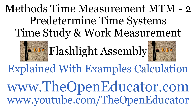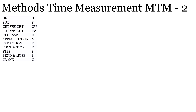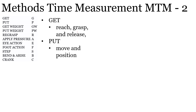This is MTM System 2, a much simpler system than Measurement System 1 seen in the previous video. I'm going to use the same flashlight assembly example. This system divides all kinds of motion into 11 categories. It combines the reach and grasp into a 'get' category, and move and position into a 'put' category, so you only have to use these 11 categories.